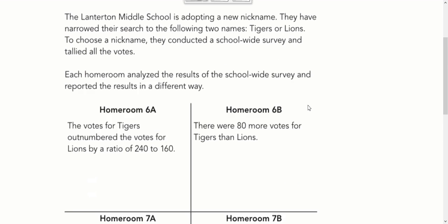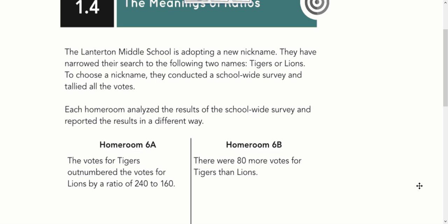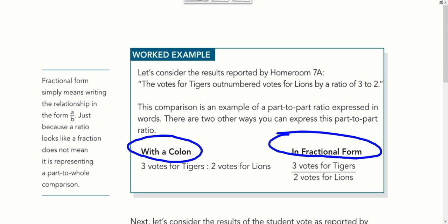On this next page, I think it is 15, it introduces this idea of voting for mascot. We're going to focus in on this homeroom 7A. Because they say the votes were three to two. We have three votes for tigers and two votes for lions.